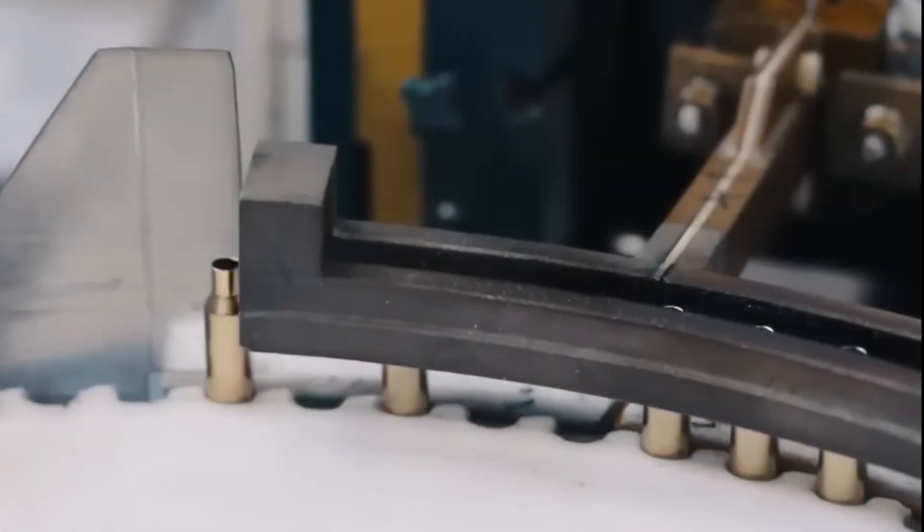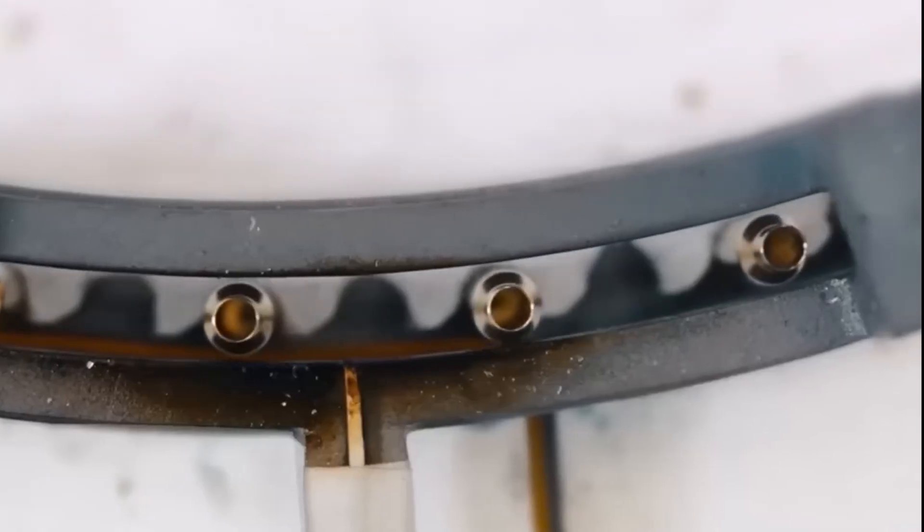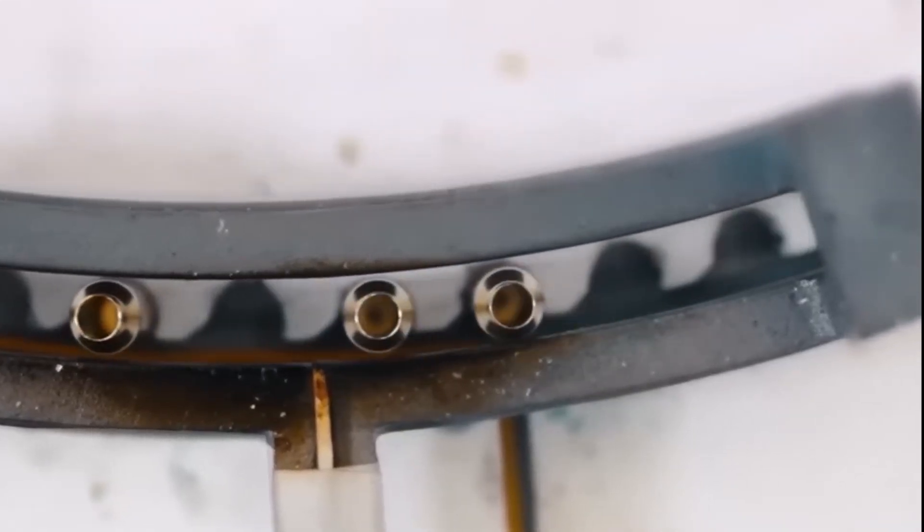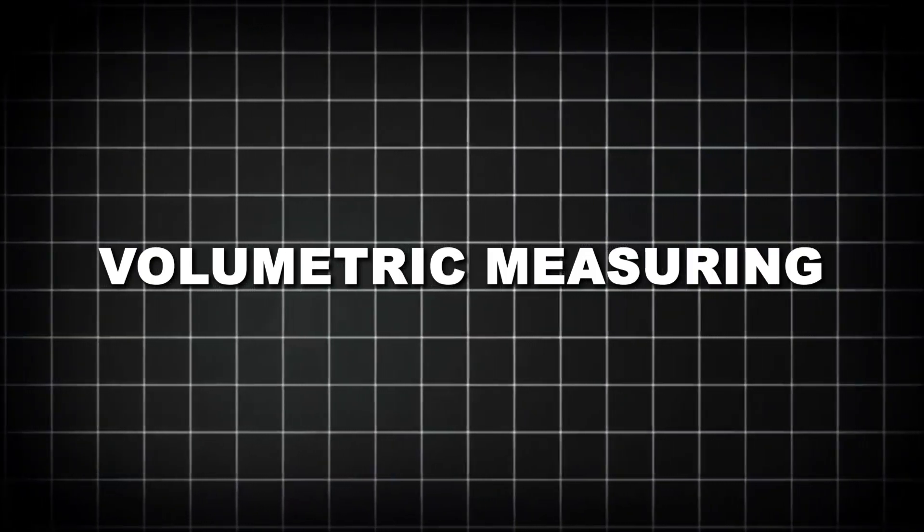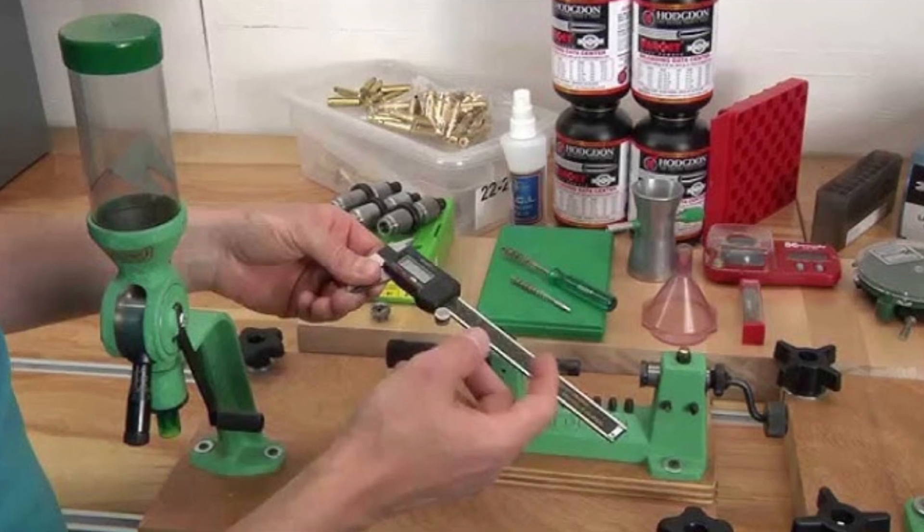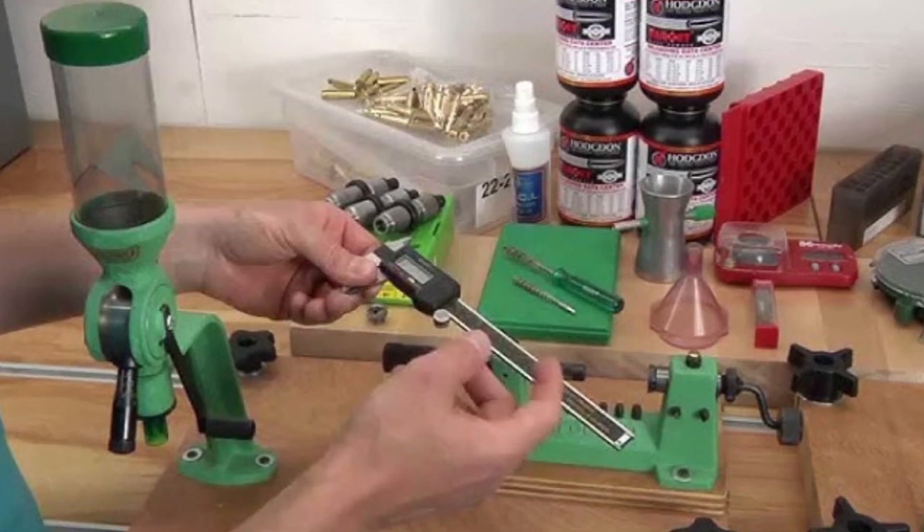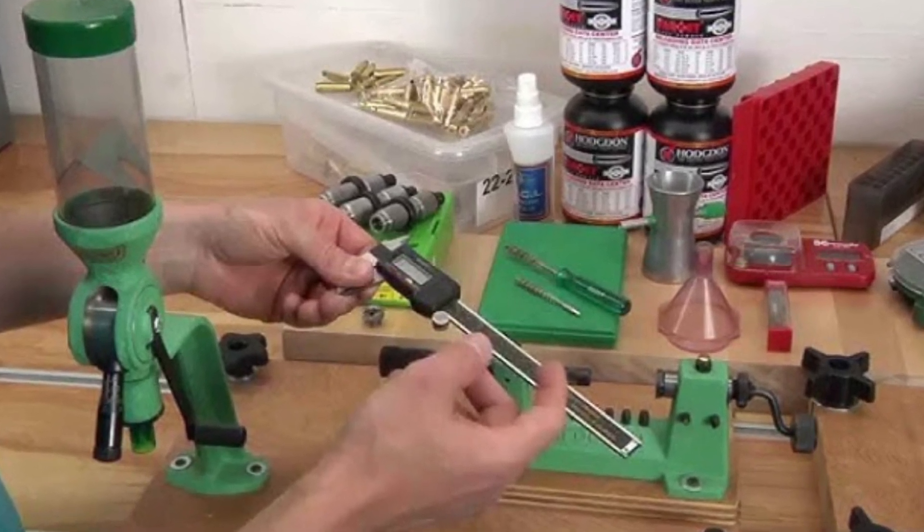In high-volume factories, automated powder measures dispense precisely weighed charges into each case. These systems use various methods including volumetric measuring, where a cavity of exact size fills with powder, or more advanced weight-based systems that verify each charge.